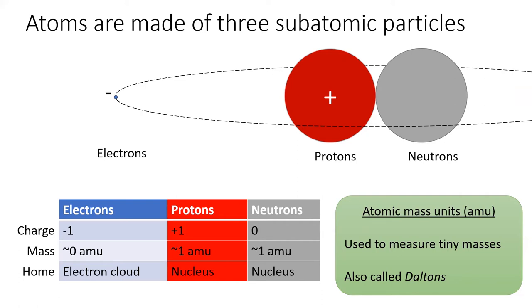Electrons are constantly whizzing around the outside of the atom, while protons and neutrons are confined to the nucleus.